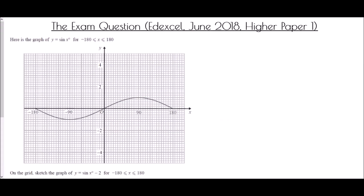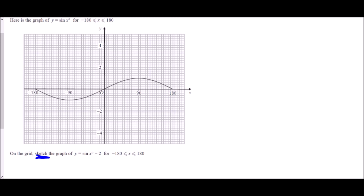We end with an exam question from the Edexcel paper in June 2018, higher paper 1. We've been given the graph of y equals sine x, running from negative 180 up to positive 180. We're asked to sketch the graph of y equals sine x take away 2. Notice the word 'sketch' — it doesn't need to be perfectly accurate but does need to have some key features. Sine x here is our f of x, the original function, and then we've taken away 2. That is a translation in the y direction — it's going to go down 2 spaces.